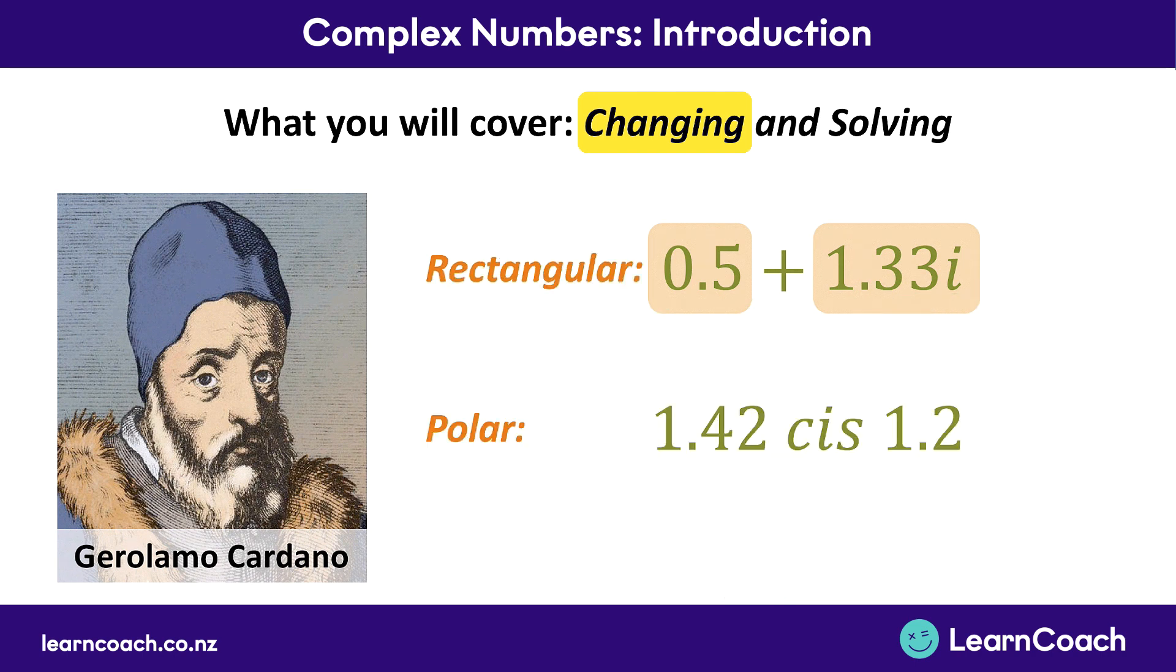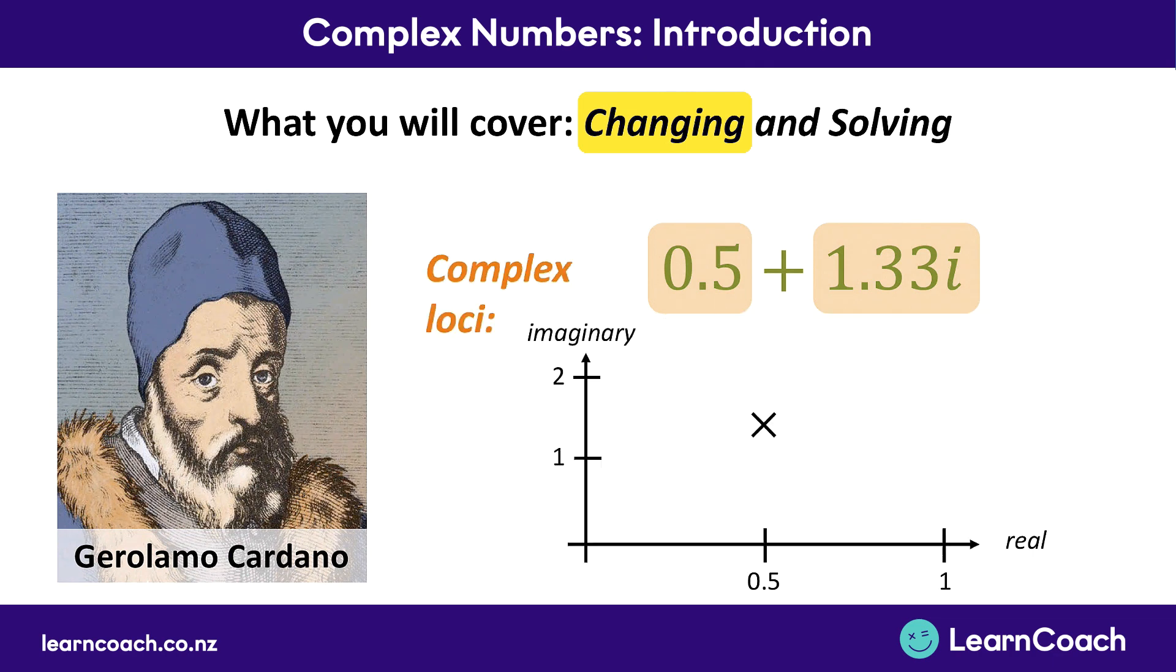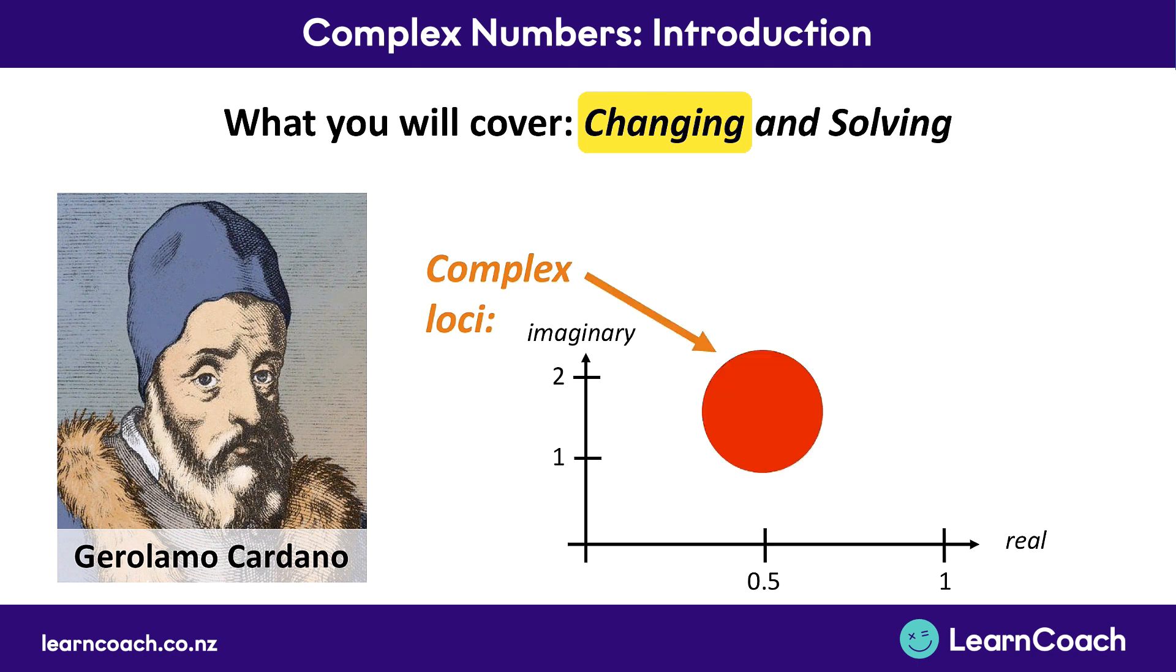Another thing you might do is change the form of a complex number. So this complex number can also be written as 1.42 cis 1.2. Now this might mean nothing to you right now, but we're going to learn how to change from one form into another and back again. And one last thing is you might not just want to find a single point like right here. You might want to find a whole area. So if you find a whole area, that's called a complex loci. And we're going to look at how we find regions of complex numbers as well.